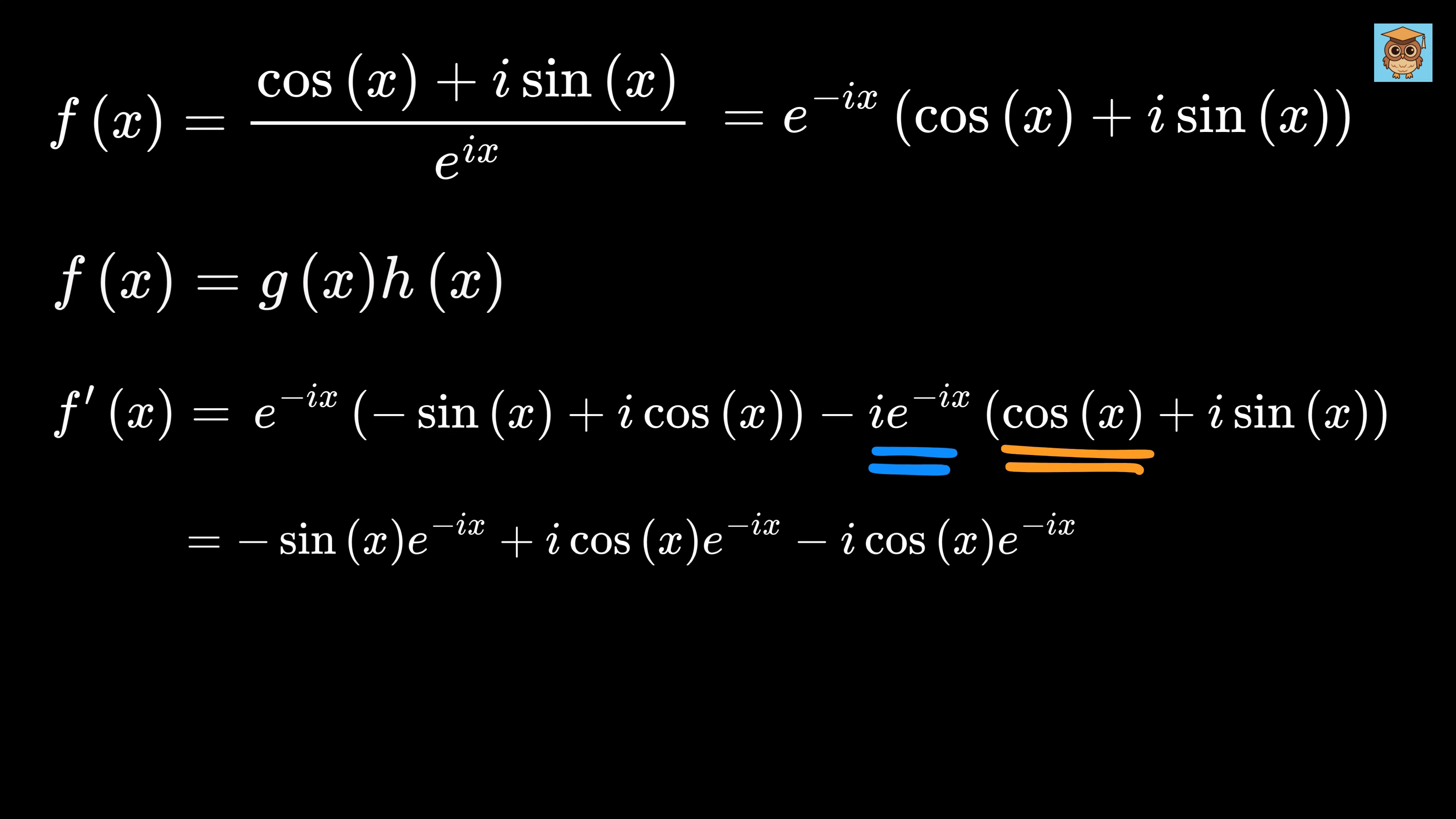Now, this will be minus i cos(x) times e to the minus ix. And this will be minus i² sin(x) times e to the minus ix. But i² equals minus 1. So this will become plus sin(x) times e to the minus ix.